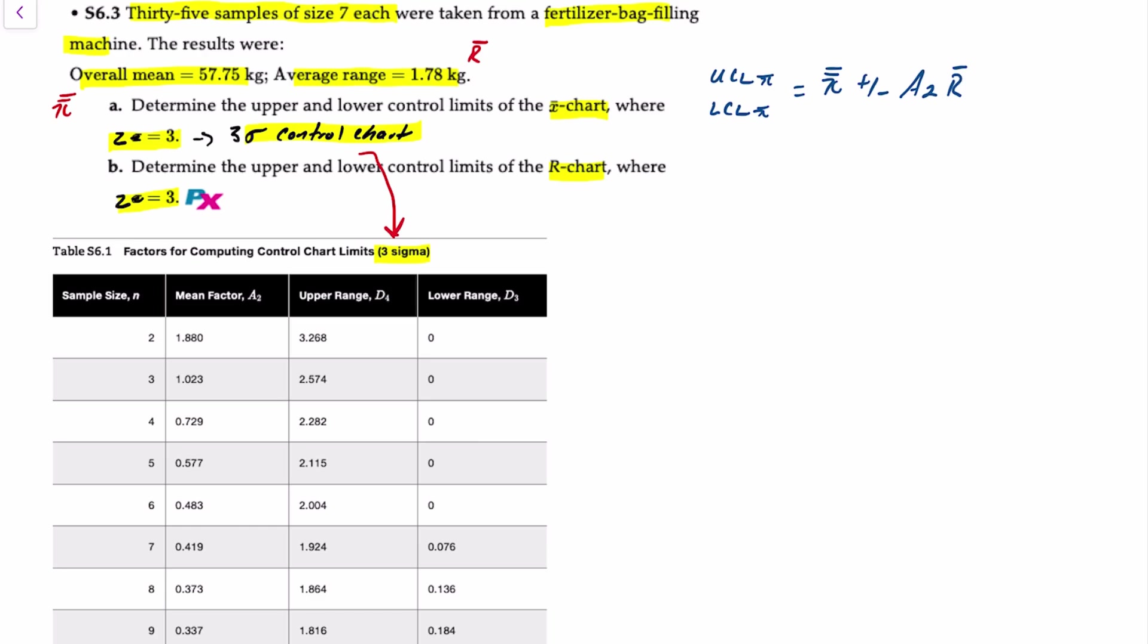If we're looking for a range chart, the upper control limit is D4 times R-bar and the lower control limit is D3 times R-bar.